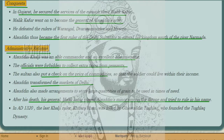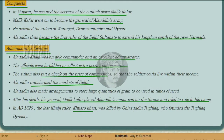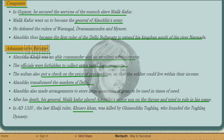After the death of Alauddin Khalji, Malik Kafur placed Alauddin's minor son on the throne and tried to rule in his name. In 1316–20, the last Khalji ruler was Khusro Khan.